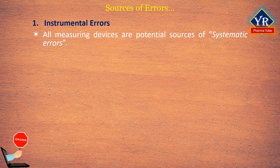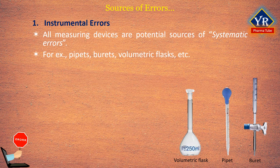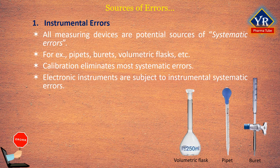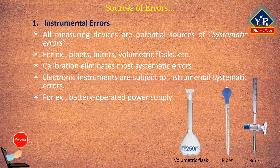All measuring devices are potential sources of systematic errors. For example, pipettes, burettes, and volumetric flasks may hold or deliver volumes slightly different from those indicated by their graduations. These differences arise from using glassware at temperatures that differ significantly from the calibration temperature, from distortions in container walls due to heating while drying, from errors in the original calibration, or from contaminants on the inner surfaces. Calibration eliminates most systematic errors of this type. Electronic instruments are subject to instrumental systematic errors; errors may emerge as the voltage of a battery-operated power supply decreases with use, or if instruments are not calibrated frequently or calibrated incorrectly.